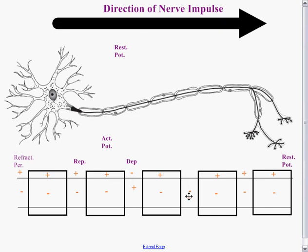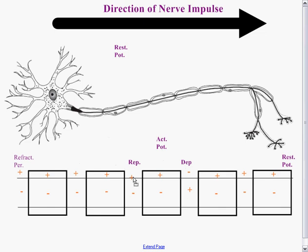Depolarization now occurs at the next node. When repolarization occurs, the refractory period moves over and the previous node returns to resting potential. As you can see, as the nerve impulse moves along, it can move a lot quicker because it's skipping the intervening spaces covered by myelin. So the purpose of the myelin sheath is to speed up the nerve impulse as it travels down the axon.